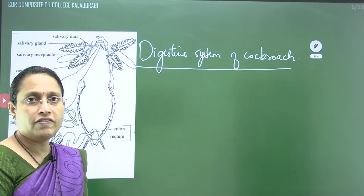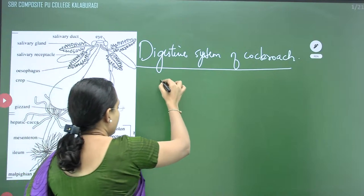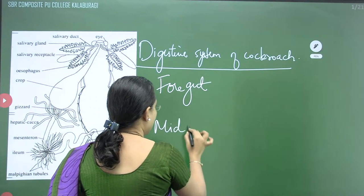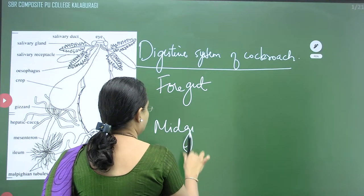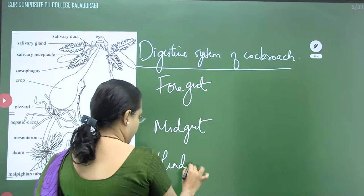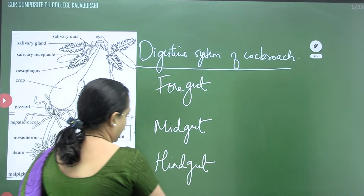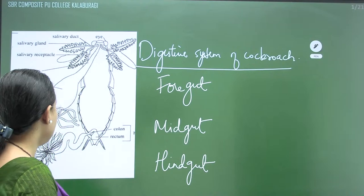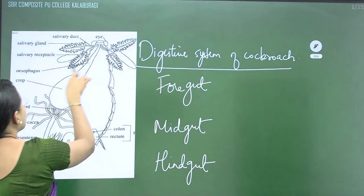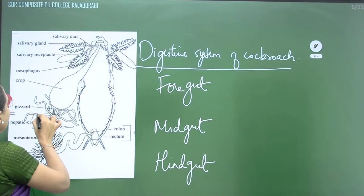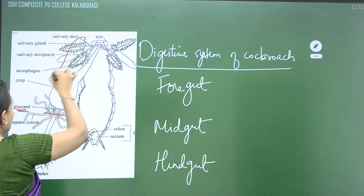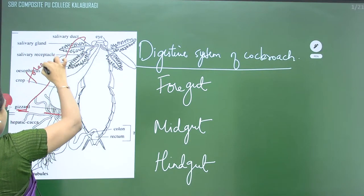The broader divisions of the cockroach digestive system: it can be divided into foregut, midgut, and hindgut. The foregut extends from the beginning of the digestive system up to and including the gizzard. The midgut — also called mesenteron — follows the foregut. The remaining parts — ileum, colon, and rectum — constitute the hindgut.